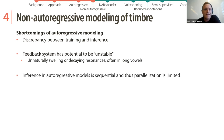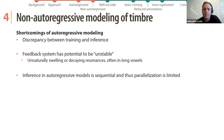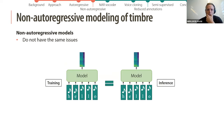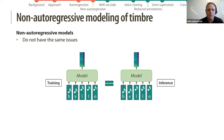Finally, a shortcoming is that inference in autoregressive models is sequential and thus cannot be fully parallelized on GPU hardware. Non-autoregressive models do not have these issues: training and inference are exactly the same and there's no feedback connection.